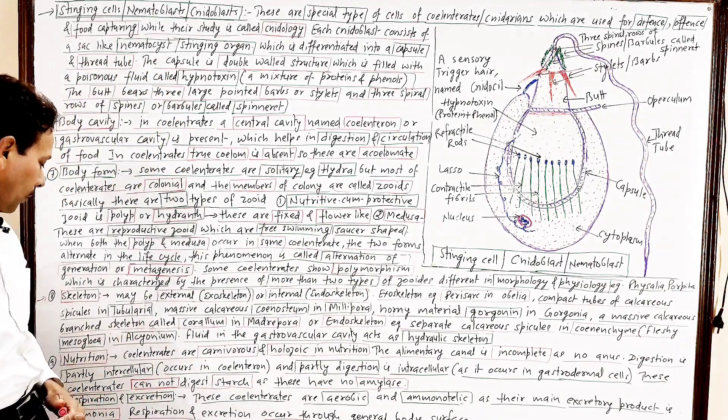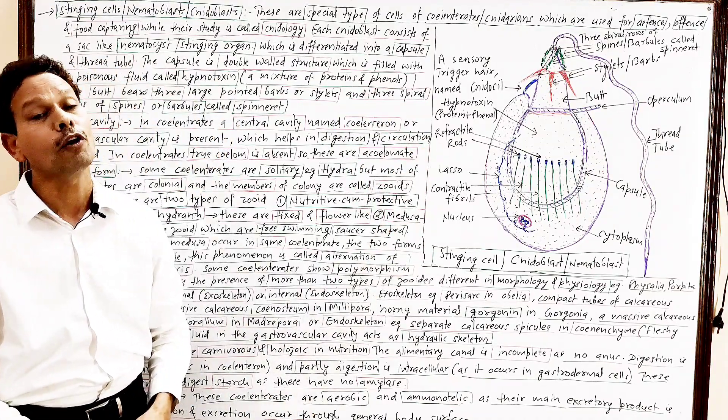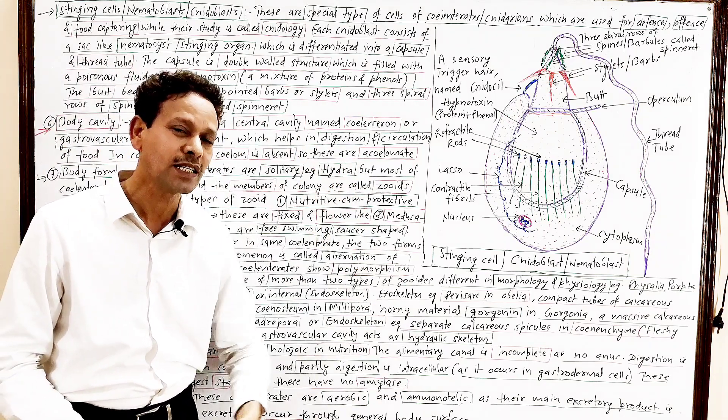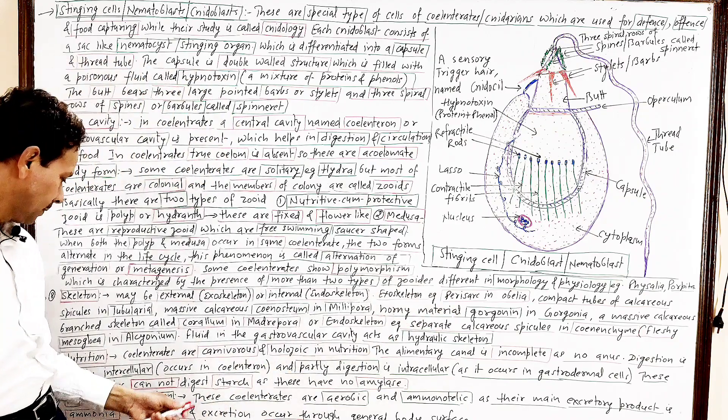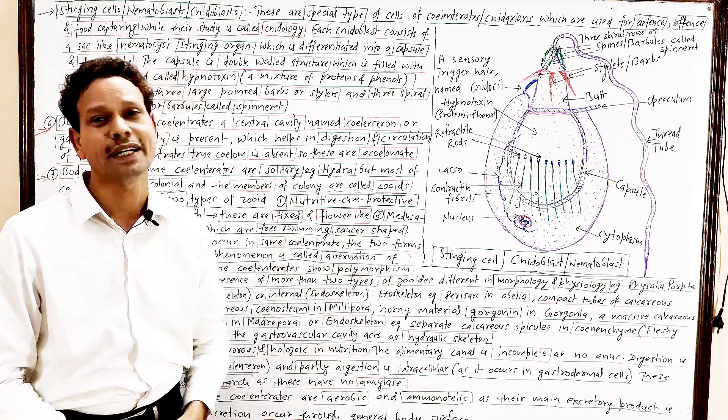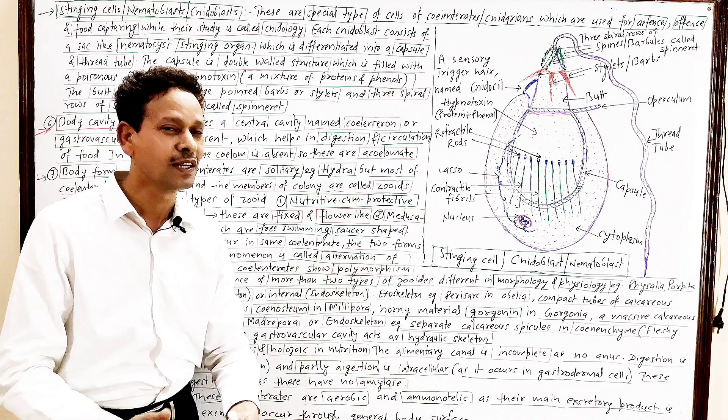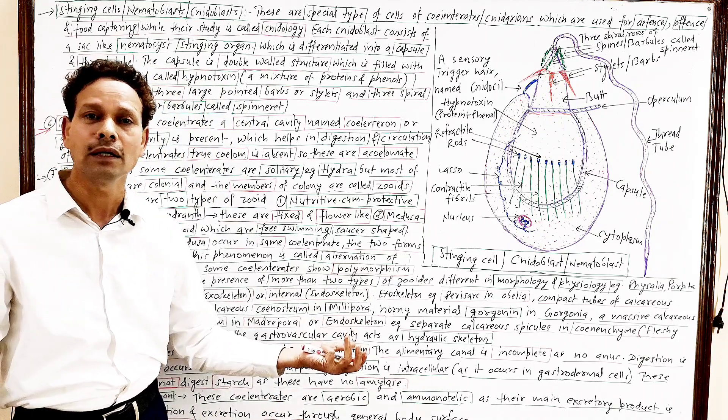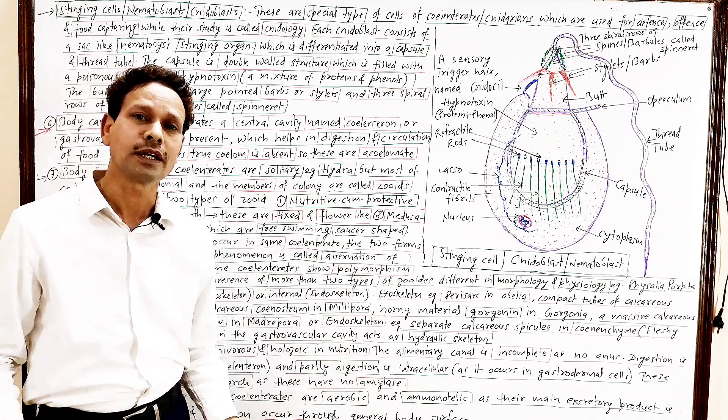Next important property, that is respiration. All these coelenterates are aerobic in mode of respiration. And that exchange of gases takes place through general body surface. Excretion. Note down, excretion. All coelenterates are ammonotelic. It means the chief, the main excretory product is ammonia. And that ammonia, that waste product is removed through general body surface.